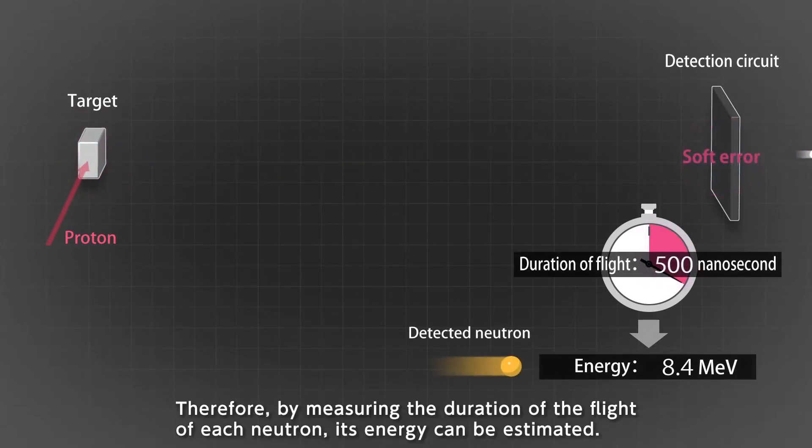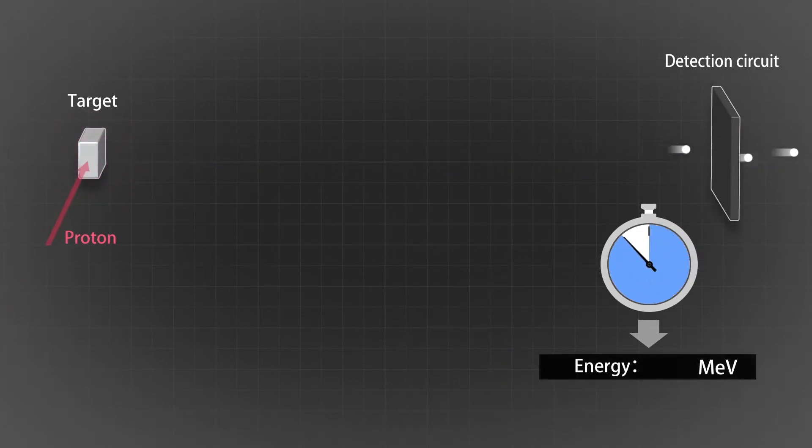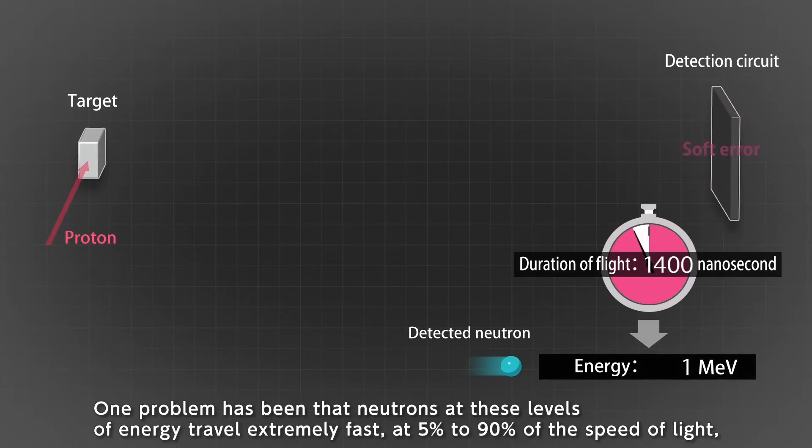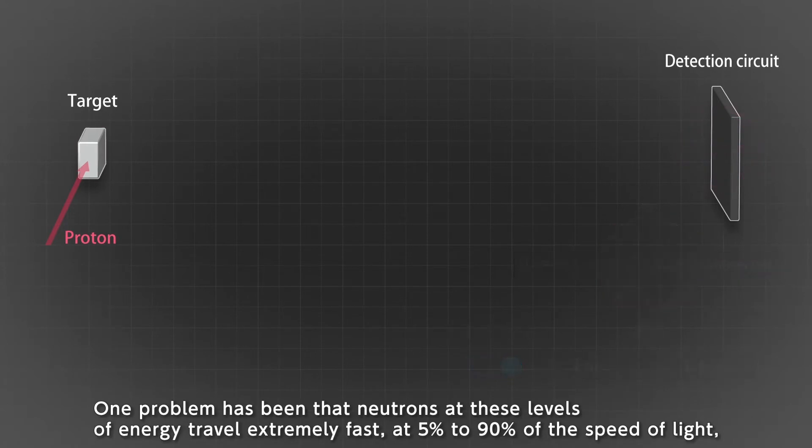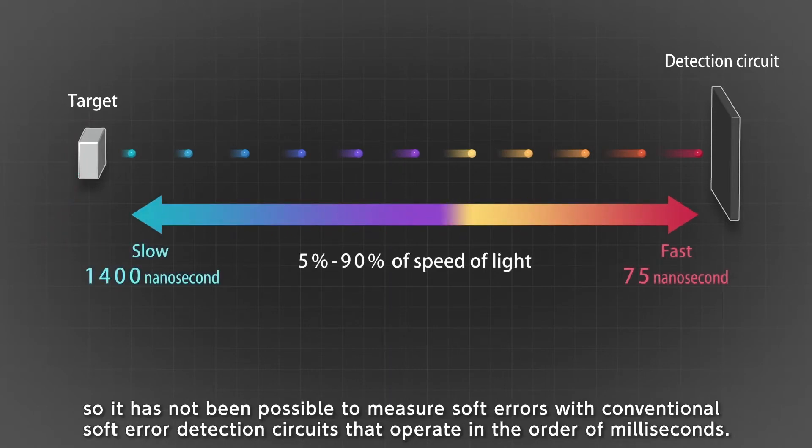Therefore, by measuring the duration of the flight of each neutron, its energy can be estimated. One problem has been that neutrons at these levels of energy travel extremely fast, at 5% to 90% of the speed of light. So it has not been possible to measure soft errors with conventional soft error detection circuits that operate in the order of milliseconds.